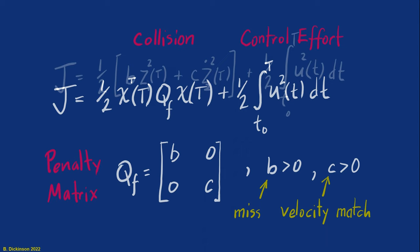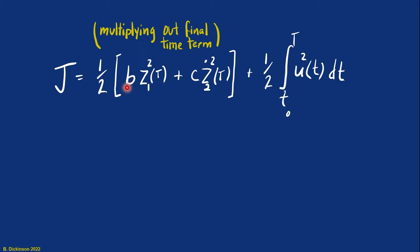Now expanding that final time term, we see the individual penalties in the Q matrix now. And think about what happens when we increase B relative to C or vice versa. Let's focus on just increasing B and holding C constant. As we increase B, this term gets larger. And so J gets larger, but the control U is attempting to minimize J. So as this gets larger, the control will attempt to attack Z, to regulate Z and make this term smaller in order to minimize J. B and C are essentially tuning knobs where we can shift the weight of the control effort to regulate Z1 at T or regulate Z2 at T.